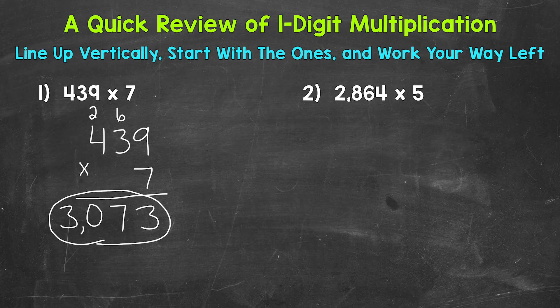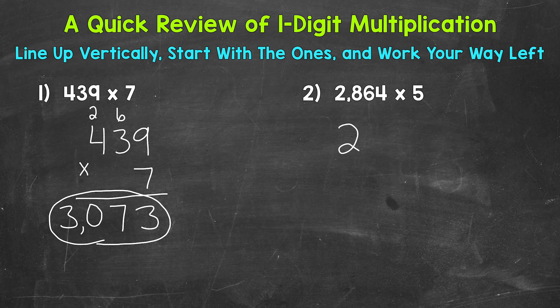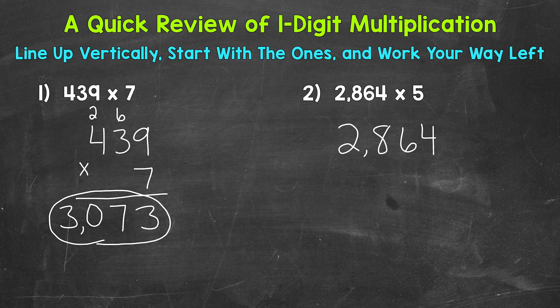Let's move on to number 2 and do another example. For number 2 we have 2,864 times 5. So let's rewrite this vertically. 2,864 times 5.